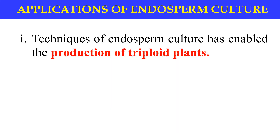What are the applications of endosperm culture? As we know, the endosperm is triploid in nature. Endosperm culture can be used for the production of triploid plants. Triploid plants are self-sterile and usually seedless. This trait increases the edibility of fruits because they are seedless and therefore more easily edible.